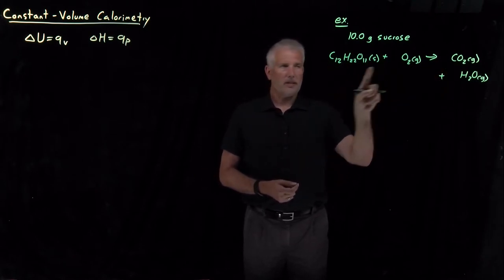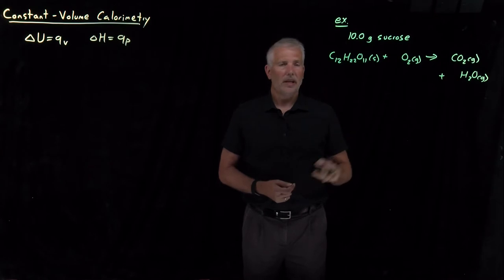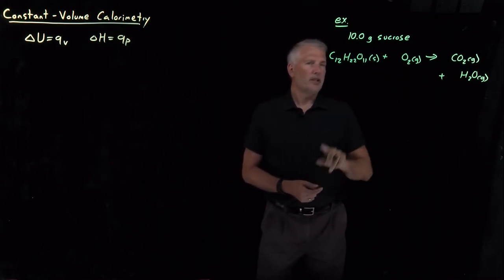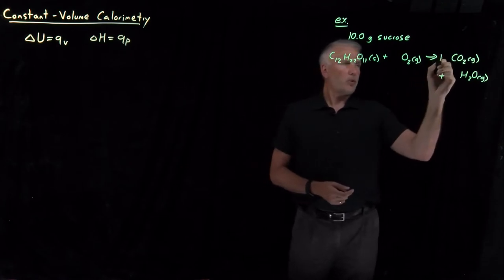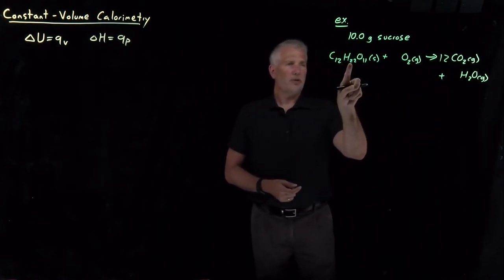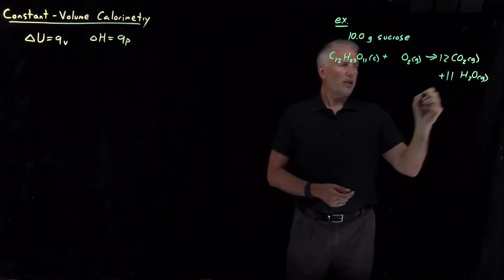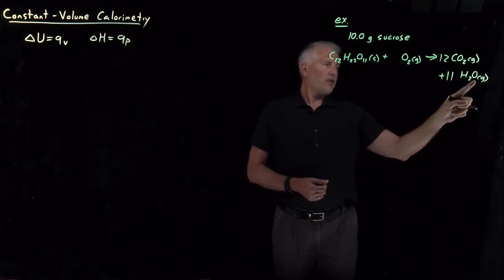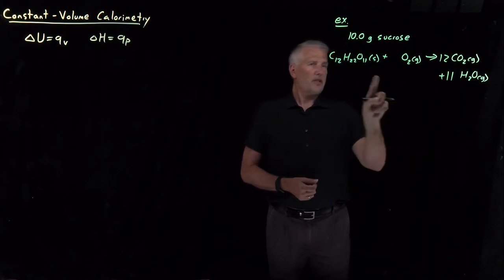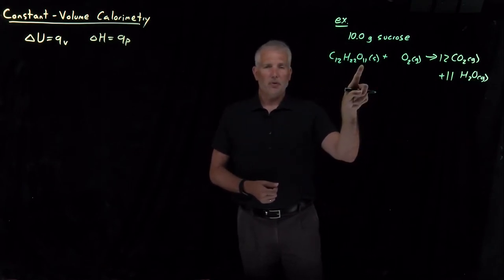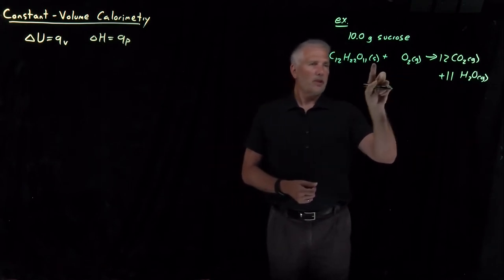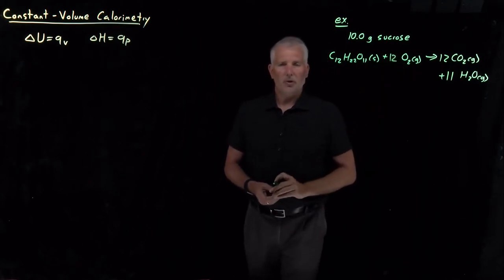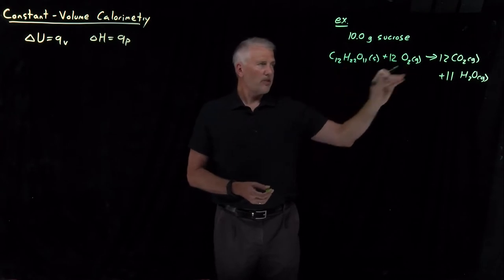The carbons turn into carbon dioxide, the hydrogens turn into water, and it may take some oxygen to make that happen. If we balance that reaction, 12 carbons are going to form 12 CO₂s, the 22 hydrogens are going to form 11 waters. If I have 24 plus 11 is 35 oxygens on this side, 11 of which came from the sucrose, that leaves 24 divided by 2, which is 12 molecules worth of oxygen.